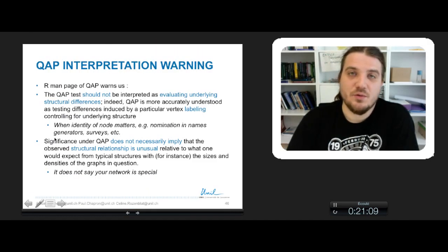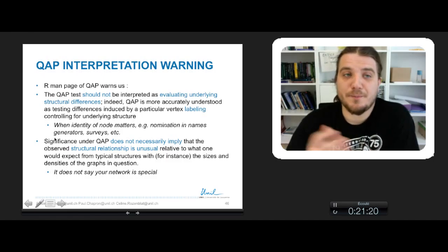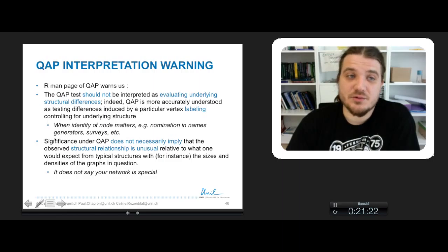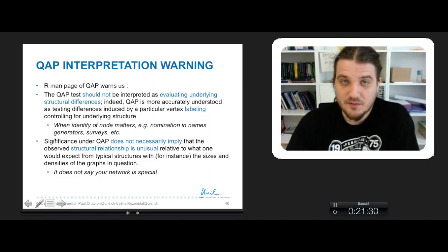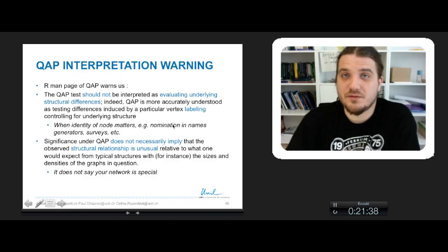So finally, there is a warning in the manual page of the QAP function in R that warns us about the use of a QAP correlation test. The first point is that the QAP test should not be interpreted as evaluating underlying structural differences. So basically, it means that when the identity of your nodes matters, for example when you've got some nominations for name generators in social science, when you've got surveys and so on, you can use a QAP test.